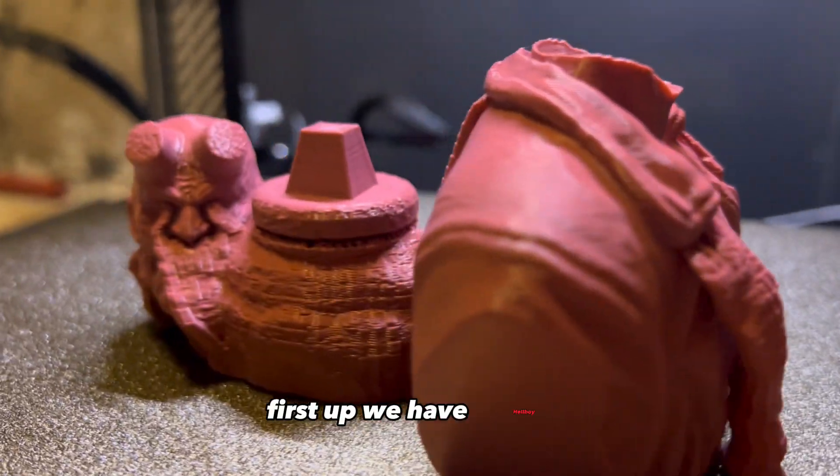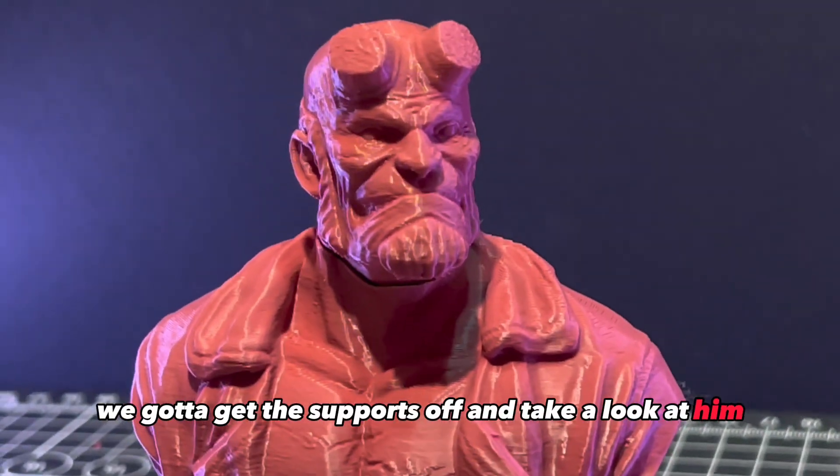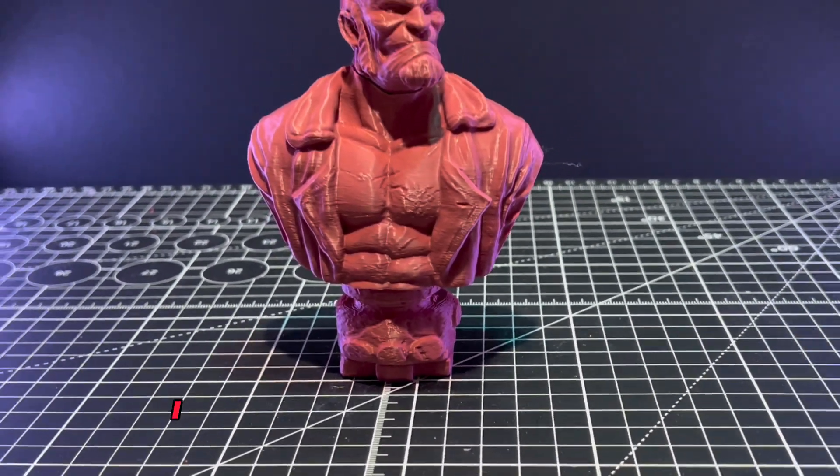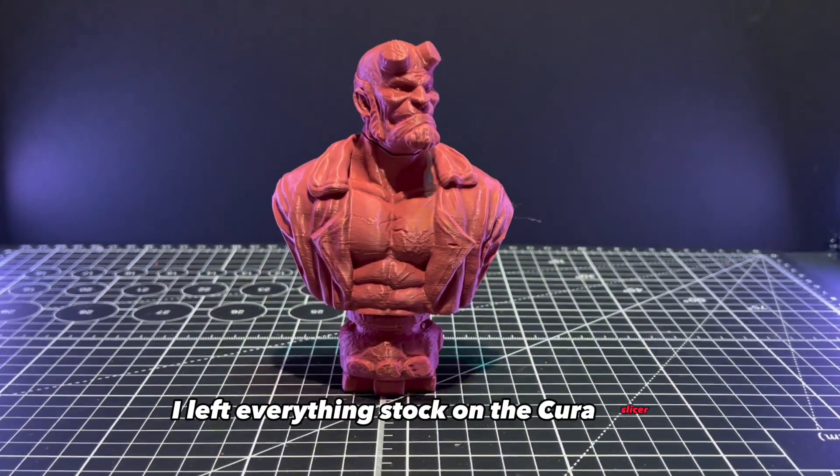First up we have Hellboy. We've got to get the supports off and take a look at him. He took three hours to print and was printed at a 0.2 layer height. I left everything stock on the Cura Slicer.